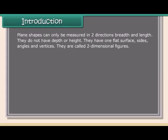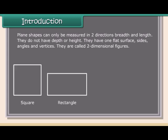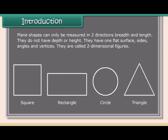Plane shapes can only be measured in two directions: breadth and length. They do not have depth or height. They have one flat surface, sides, angles, and vertices. They are called two-dimensional figures, such as square, rectangle, circle, and triangle.